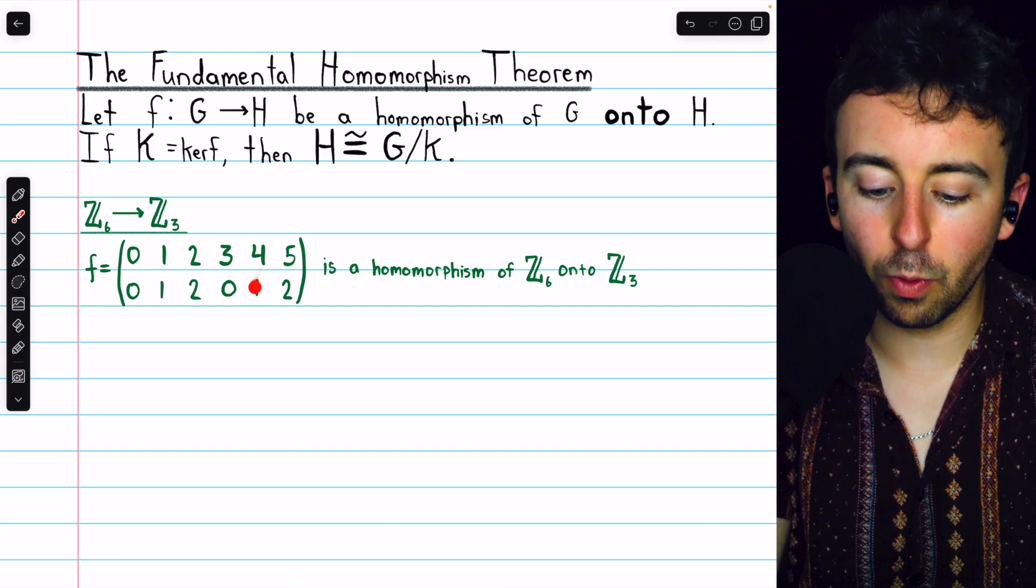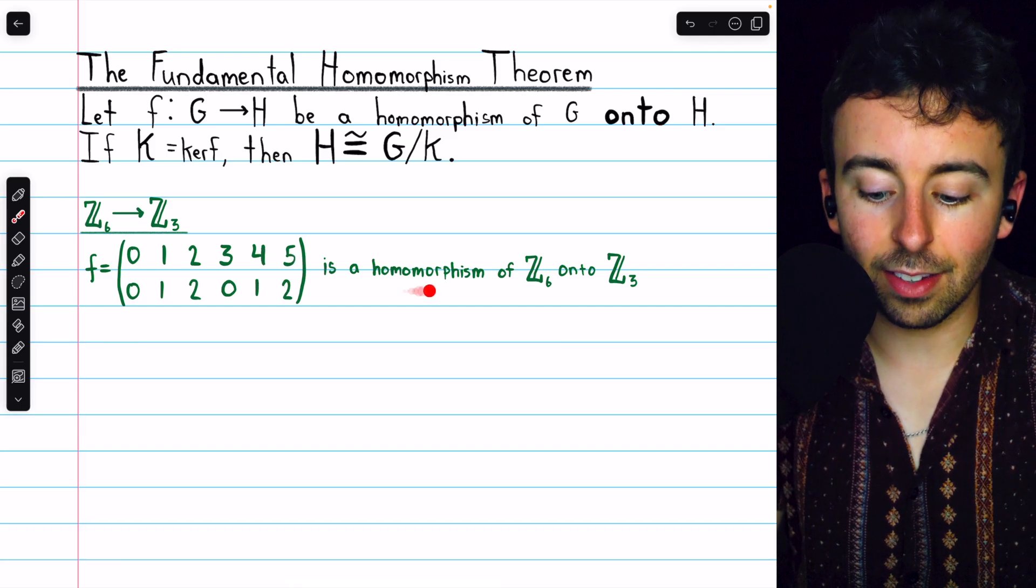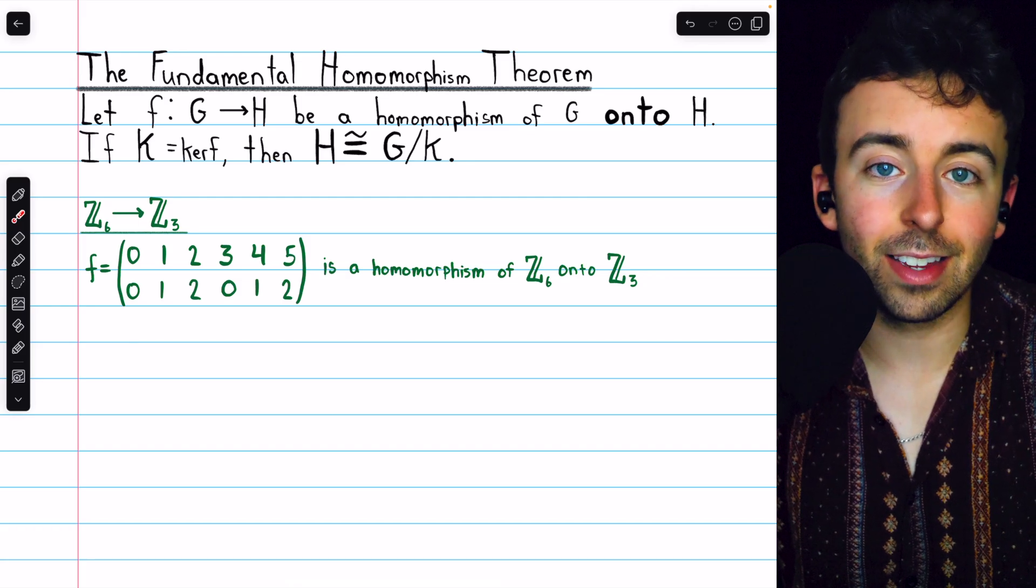It also maps 3 to 0, 4 to 1, and 5 to 2. Now this is surjective and it is a homomorphism, which is easy to verify.